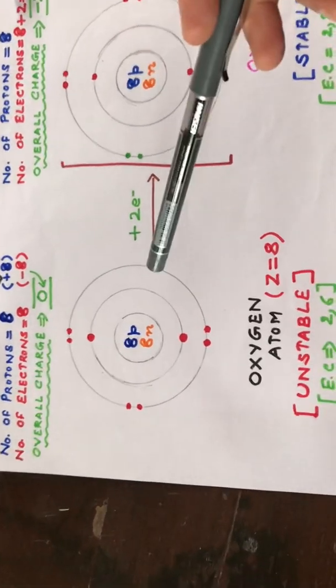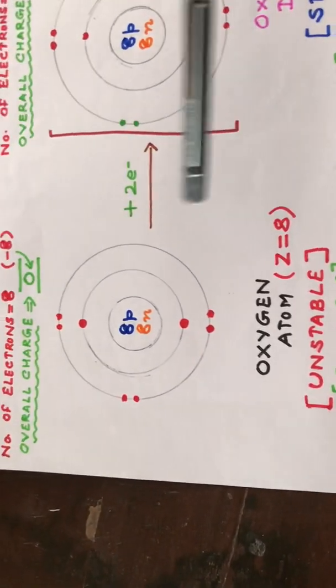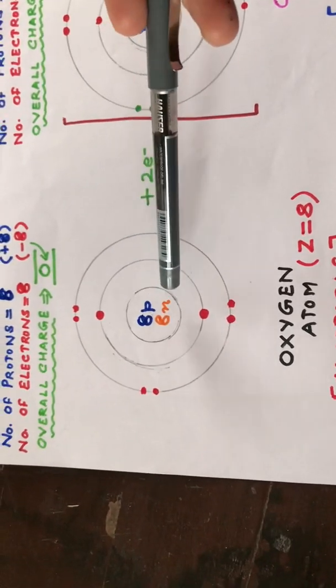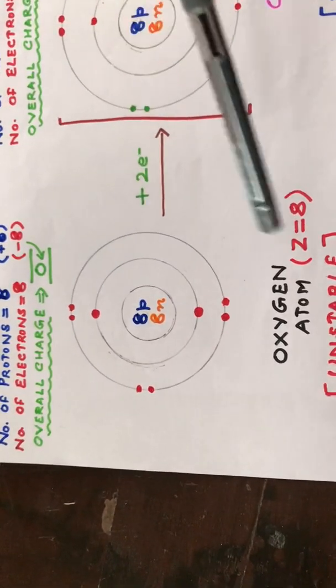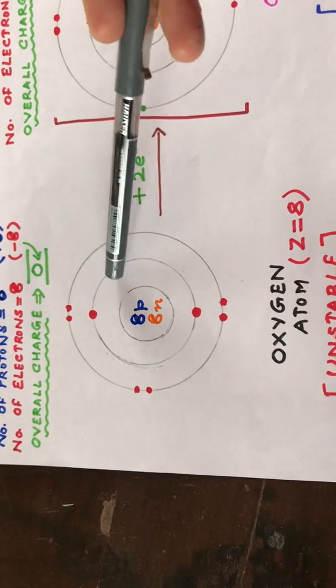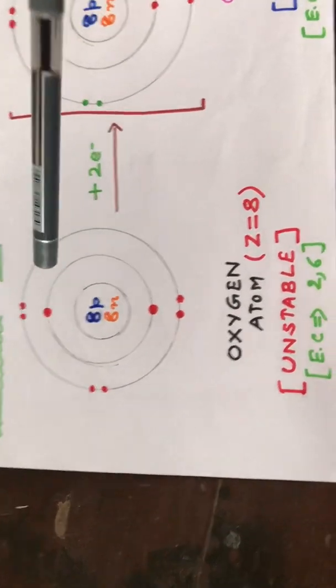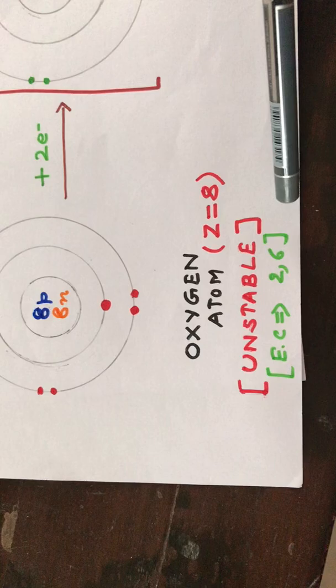Oxygen has an atomic number of eight. It has eight protons, eight neutrons, and eight electrons in total. Two electrons are in its first shell and six electrons in its second shell, so it has an electronic configuration of 2,6.